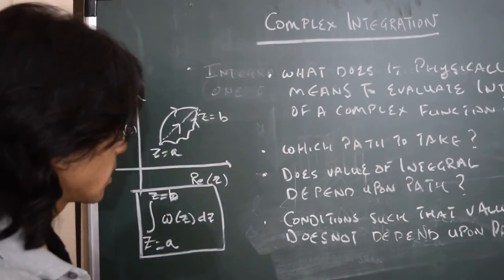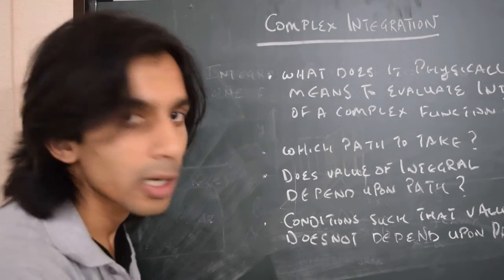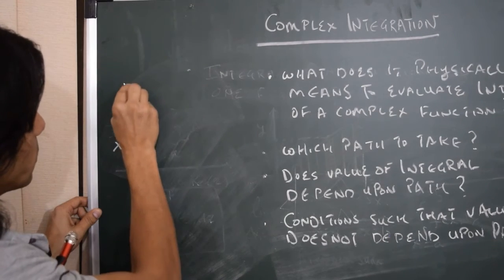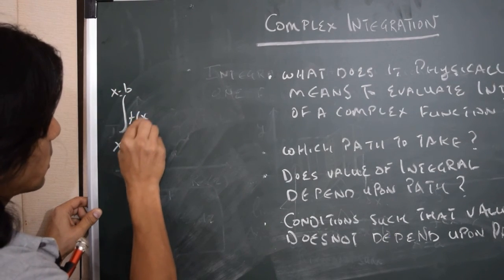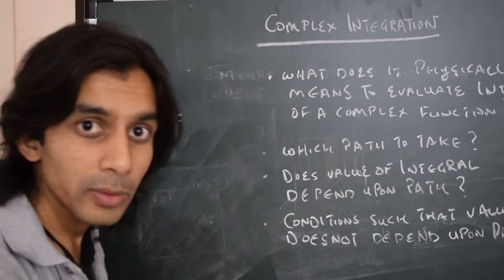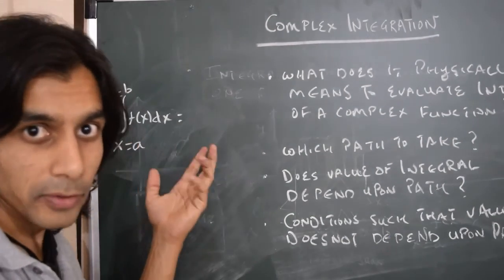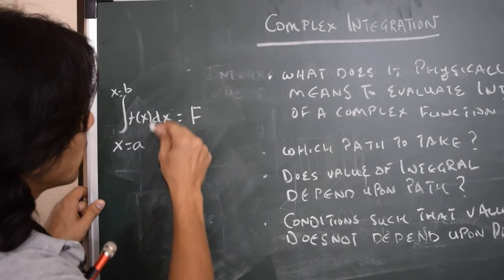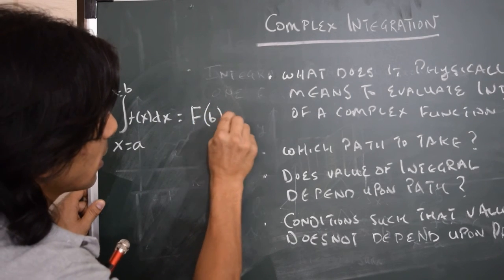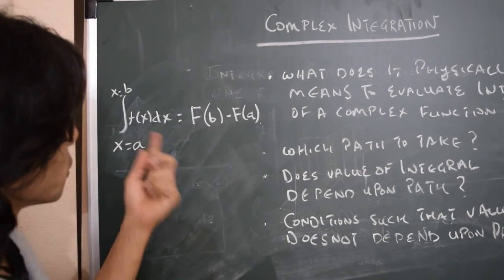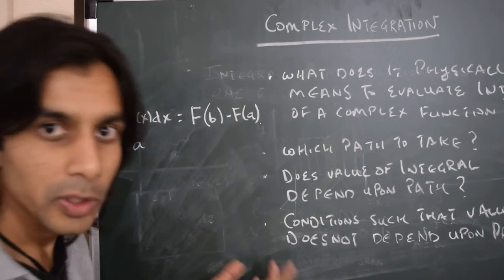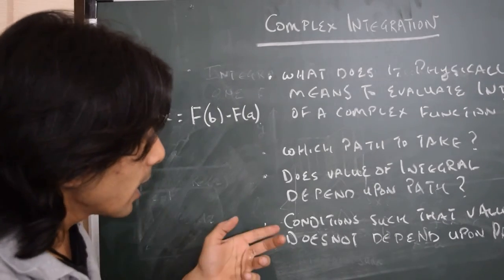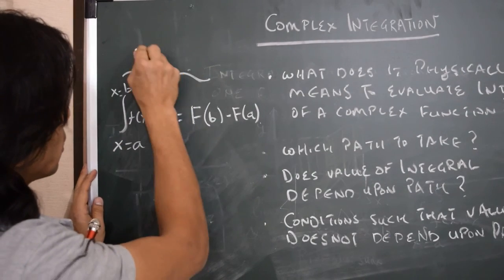This in particular is a very interesting question. If you recall integration of a function of one real variable — say we integrate from x equals a to x equals b some function f(x) dx — then from the fundamental theorem of calculus, we know that if f(x) has an antiderivative capital F, then the value of this integral is capital F evaluated at b minus capital F evaluated at a. So the value of the integral does not depend upon the path; it just depends upon the endpoints. This essentially is the fundamental theorem of calculus.